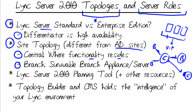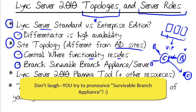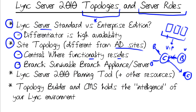The branch office is a remote location that derives most of its functionality from the central site. But to maintain voice resiliency — that is, what happens if that WAN link goes down — you'll need to deploy what's called a Survivable Branch Appliance, or SBA. This is a hardware appliance that provides basic Lync functionality and registration, becoming the branch users' registration pool. It also gives them PSTN connectivity so they can still make and receive PSTN calls if the WAN link is down. A Lync Server 2010 planning tool is invaluable for planning your deployment, and you can download it as a small desktop application from the Microsoft Download site.